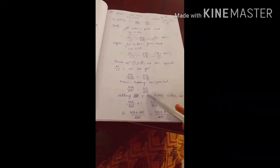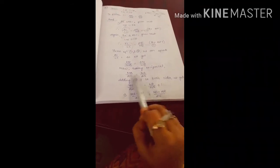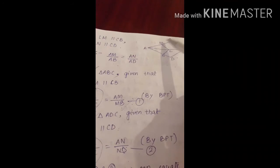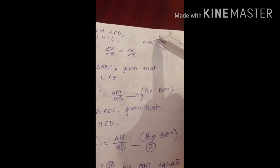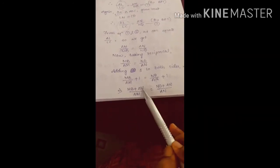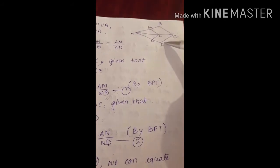Adding 1 to both sides of AM/MB = AN/ND: (MB + AM)/MB = (ND + AN)/ND, which gives AB/AM = AD/AN. Taking reciprocals on both sides, we finally get AM/AB = AN/AD.